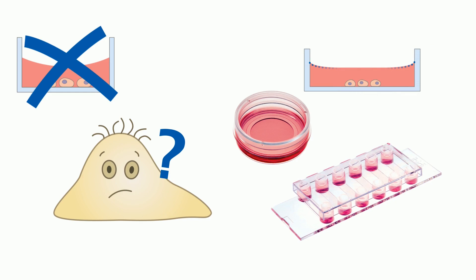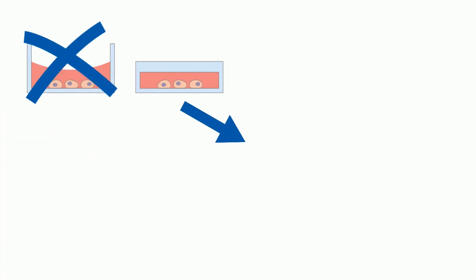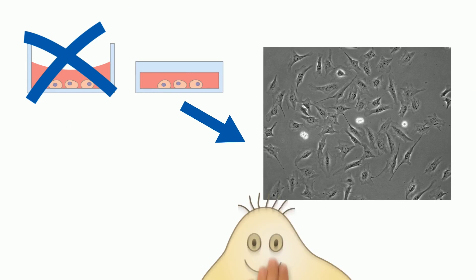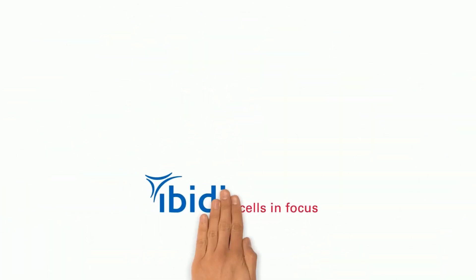You can use the ibidi channel slides, for example. In these slides, meniscus formation is geometrically impossible, resulting in excellent phase contrast images and happy scientists.